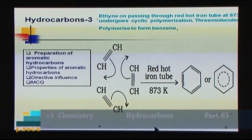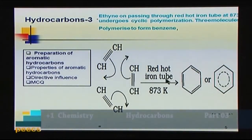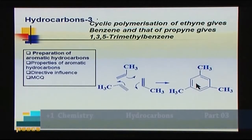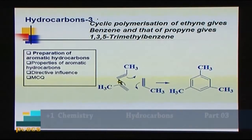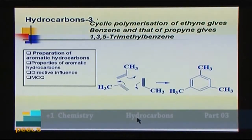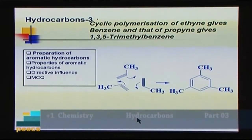The second method we discussed is that when acetylene is passed through a red hot iron tube, it undergoes trimerization and acetylene is converted to benzene. When we use propyne instead of acetylene, it also trimerizes to give 1,3,5-trimethylbenzene. So acetylene and its derivatives can be converted to aromatic hydrocarbons by passing through a red hot iron tube.